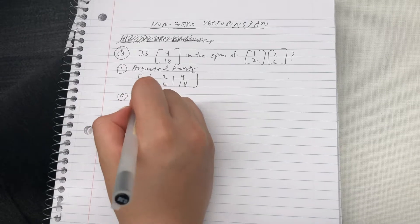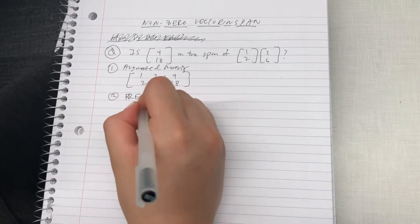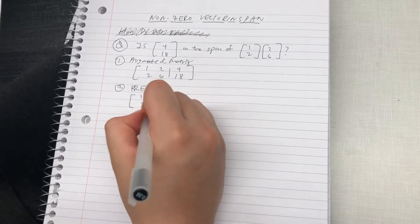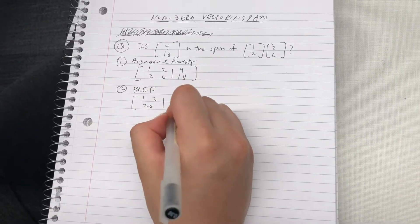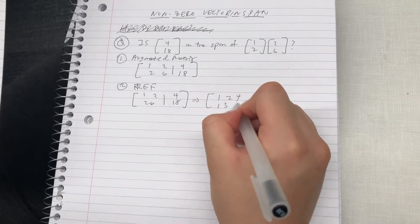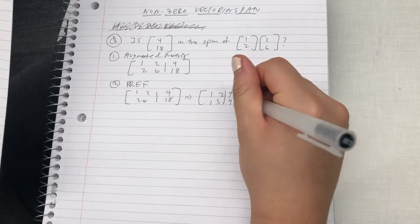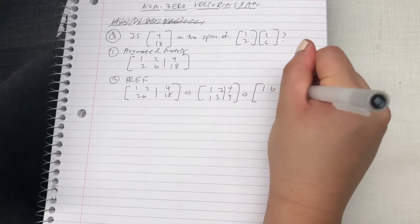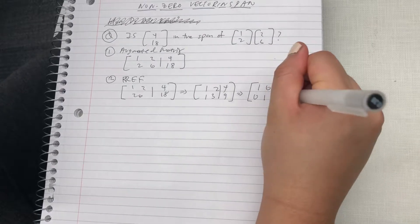Our next step is to get the reduced row echelon form. Here, and then eventually you find the form of 1, 0, negative 6, 0, 1, and 5.